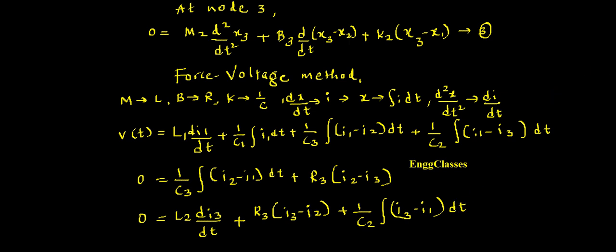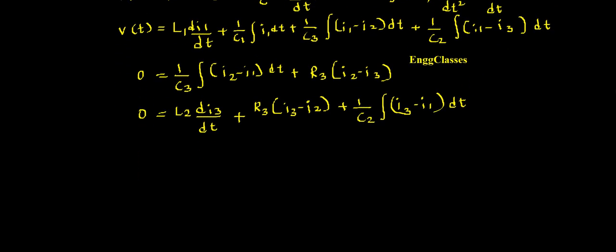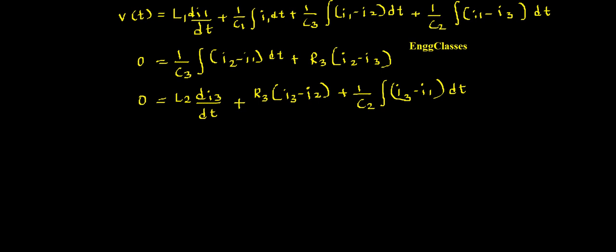For these three equations I need to draw the equivalent electrical network. First I have to draw the loops — three equations means there must be three loops. So let me call this the first loop, this the second point, and this the third point. In the first loop I have L1, and the applied voltage is V(t).